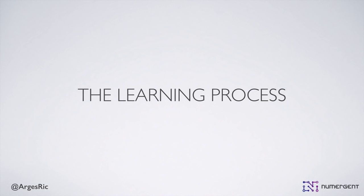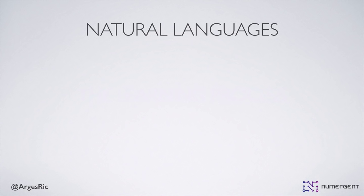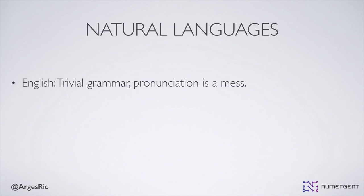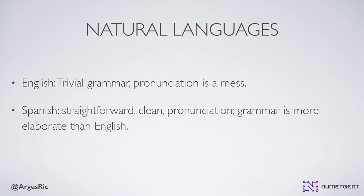Let's talk a bit about the learning process for Clojure. The thing with any language — any natural language — is that you have to know its skew, what it's leaning towards. For instance, English has trivial grammar but pronunciation is a mess — there's no other way to learn English pronunciation but to completely memorize it because there are no rules. Spanish, on the other hand, is not as heavy on the pronunciation side — you just learn the rules and things are pronounced exactly as written.